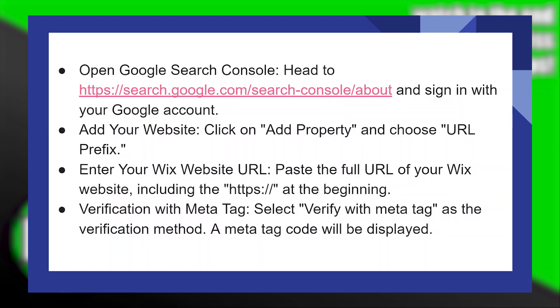First, open Google Search Console. Head to the website as shown here and sign in with your Google account. Click on Add Property and choose URL Prefix.